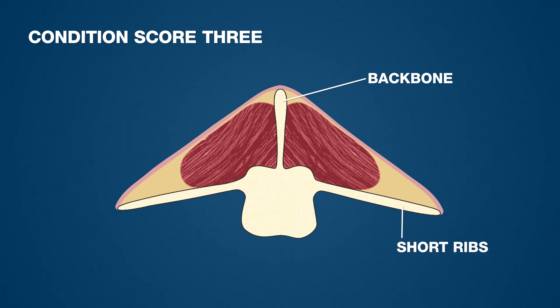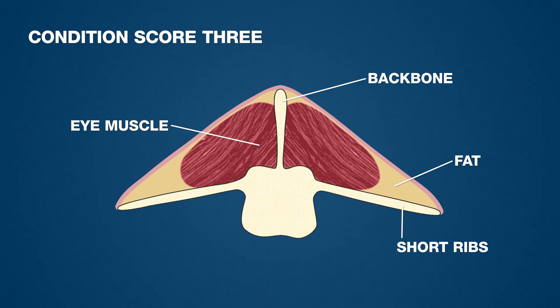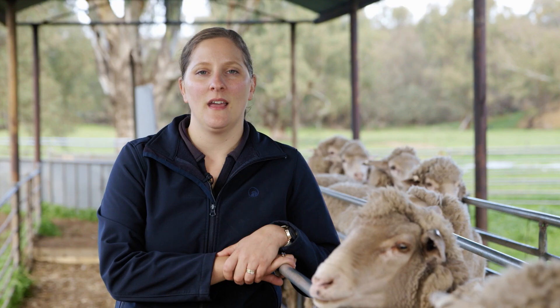Condition score 3 will have a good level of muscle and fat cover. The backbone and short ribs will have rounded ends and you shouldn't be able to feel much in between each of the bones, as there is a good level of fat and muscle covering. The eye muscle will be filled out and will make more of a straight line from the backbone to the short ribs. Between 2.5 and 3.5 is a good condition score for merino ewes from joining to lambing, with condition score 3 being the aim. It's also an ideal condition score for young sheep.